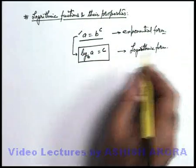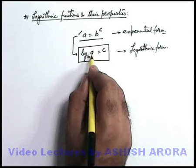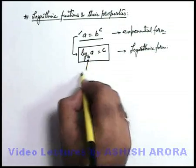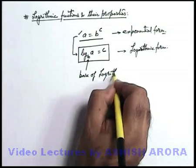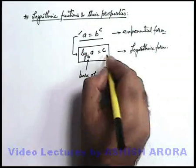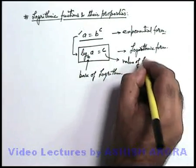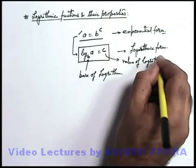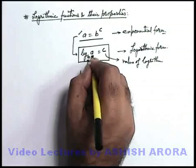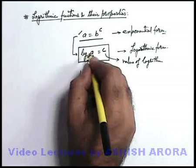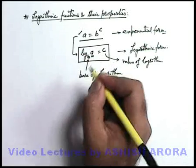Now in this logarithmic form, this is the log function. Here a is the argument of log. This b is termed as base of logarithm. C is termed as value of logarithm. And a here is the argument. It is the argument of which the logarithmic function value c is being calculated when it is calculated at base b.